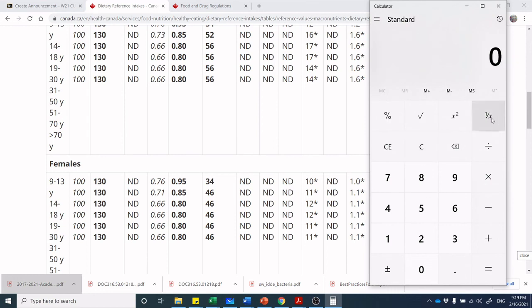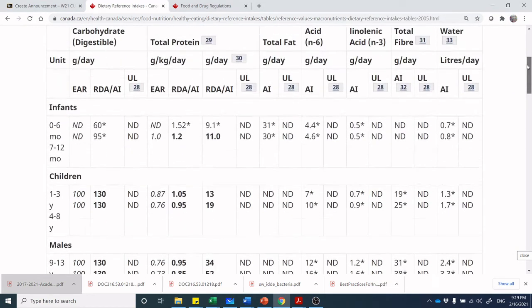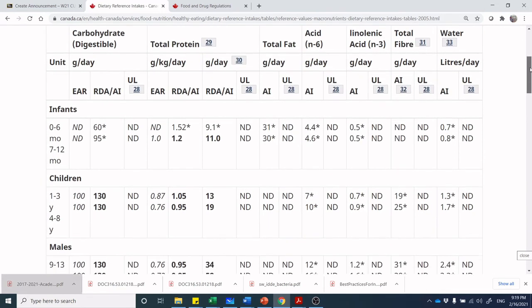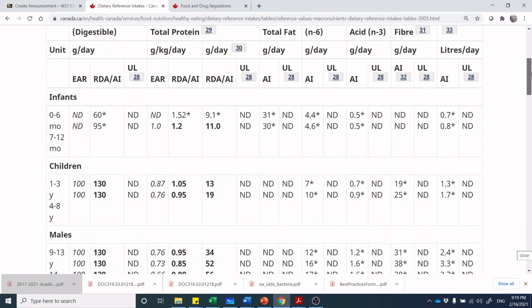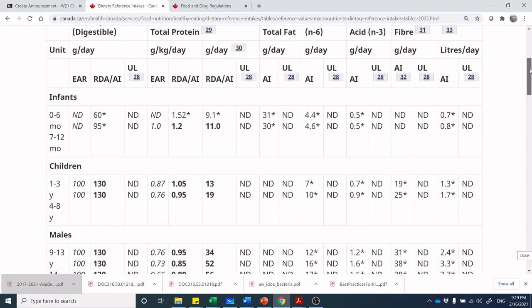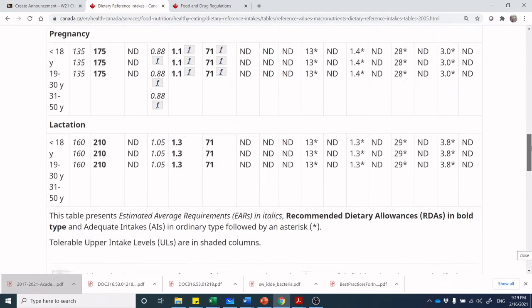Now you'll note on most of these macronutrients there is no upper limit defined. No upper limit defined on fiber, no upper limit defined on most of these different nutrients. Alpha-linolenic acid is omega-3 fatty acid and that's a fun one because we do establish some adequate intakes for those nutrients but no upper limit on those as well.